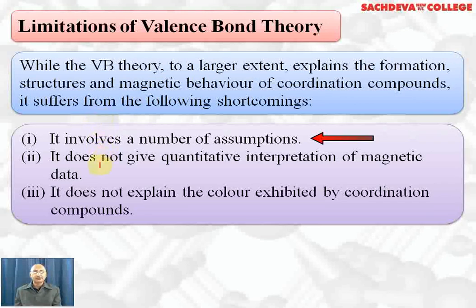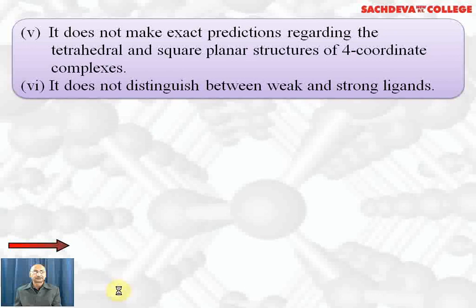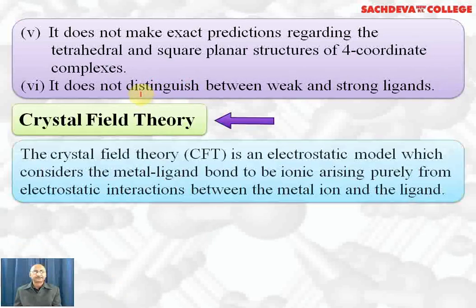VBT involves a number of assumptions. It does not give a quantitative interpretation of magnetic data. It does not explain the color exhibited by coordination compounds. It does not give a quantitative interpretation of thermodynamic or kinetic stability. It does not make exact predictions regarding tetrahedral and square planar structures with coordination number four, and does not clearly distinguish between weak field and strong field ligands.